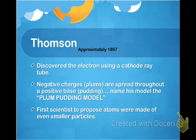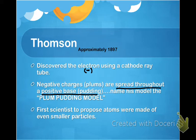The next scientist was J.J. Thomson. Around approximately 1897, he discovered the electron using a cathode ray tube — the electron was the very first subatomic particle to be discovered. He knew that the atom was overall neutral, so he knew that these negatively charged particles had to be somehow surrounded by positive charges that would neutralize them. He proclaimed that the electrons were like plums — negatively charged particles spread throughout a positive pudding — and named his model after a famous Danish dessert called plum pudding.